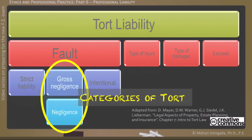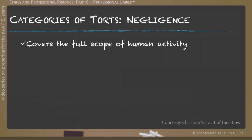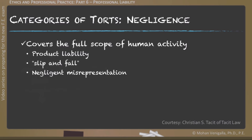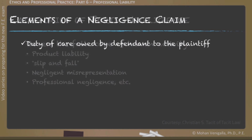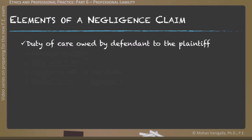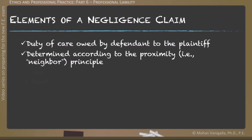Negligent tort covers the full scope of human activities such as product liability, slip and fall, negligent misrepresentation, professional negligence, and more. Duty of care is the first element that must be established to proceed with an action in negligence. The claimant must be able to show a duty of care imposed by law which the defendant has breached. Breaching a duty may subject an individual to liability. The duty of care may be imposed by operation of law between individuals with no current direct relationship, but who eventually become related in some manner as determined by common law according to the proximity principle.